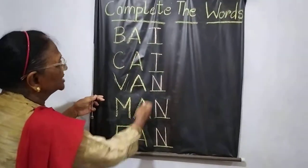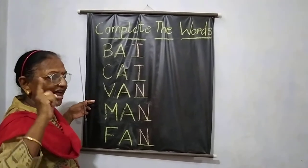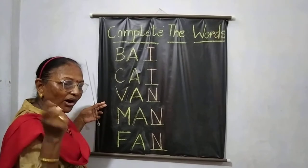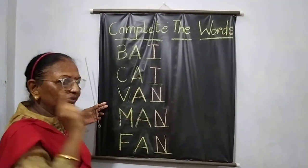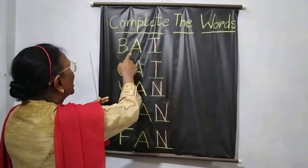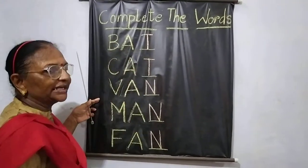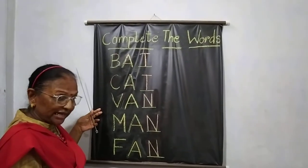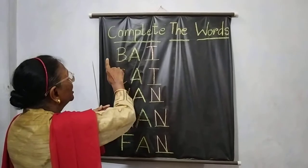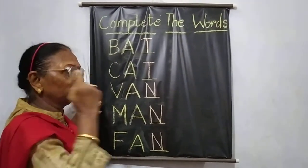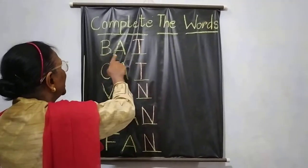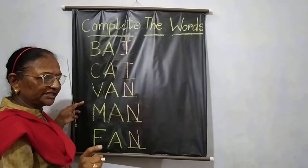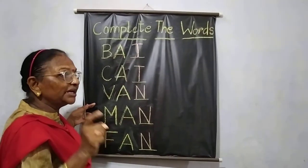These are words with the same sound: man, van, fan, can, ran — all these words ending with N. And here you have B-A-T, bat; C-A-T, cat; M-A-T, mat; F-A-T, fat; R-A-T, rat. So you have both sets of words with the same sound. B-A-T, bat; C-A-T, cat; R-A-T, rat; F-A-T, fat; M-A-T, mat.